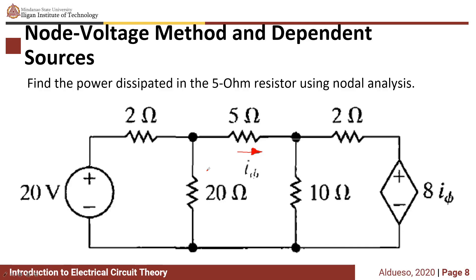The node voltage method for nodal analysis with dependent sources. For this example, find the power dissipated in the 25 ohm resistor using nodal analysis. This example contains a dependent voltage source.